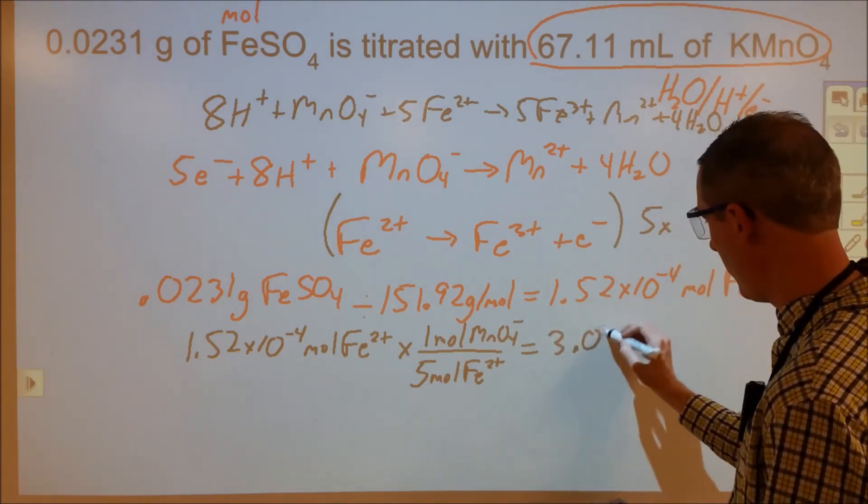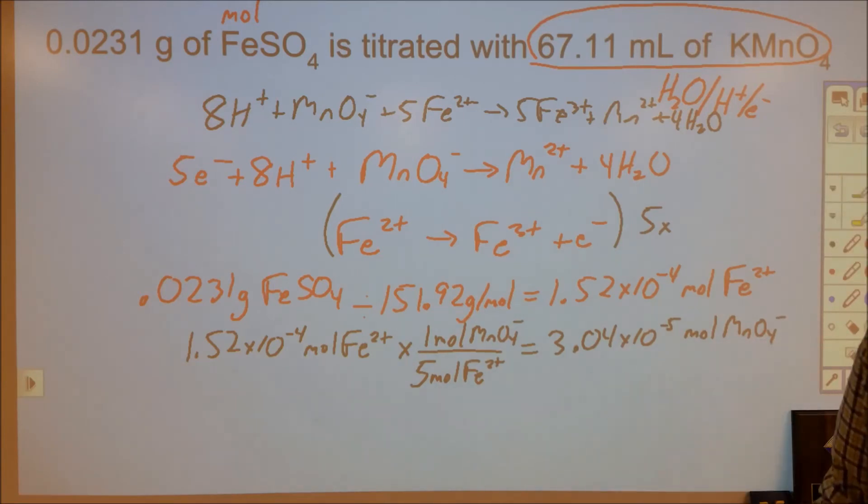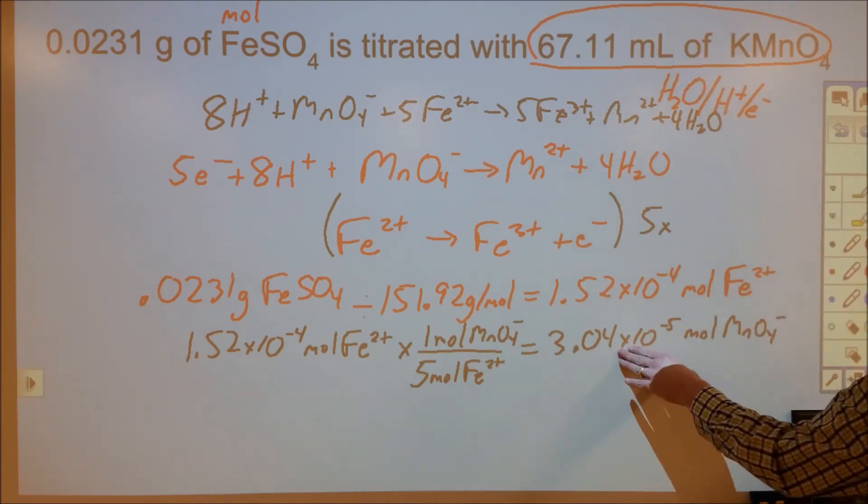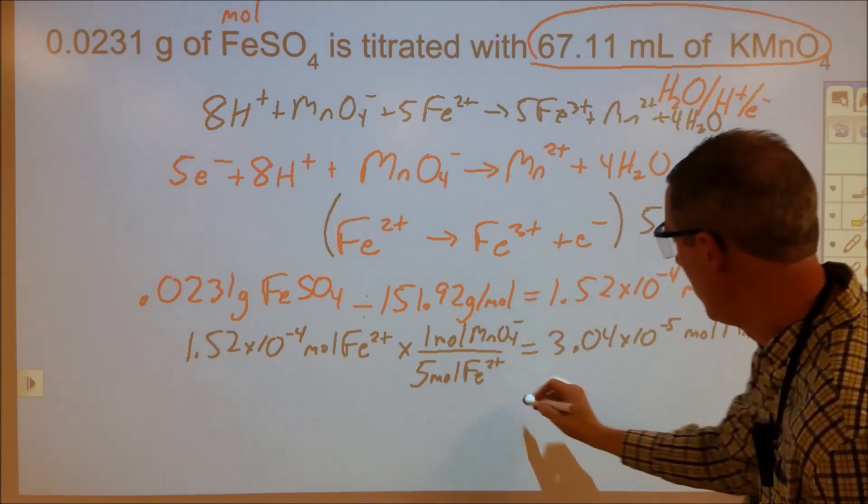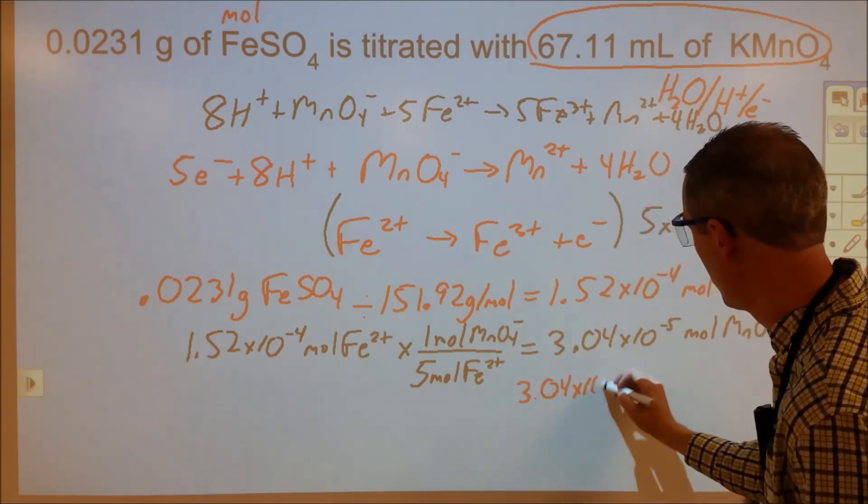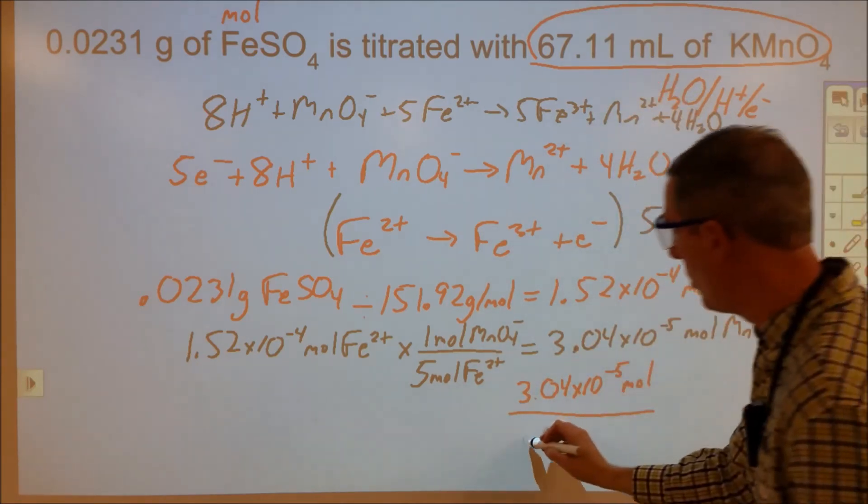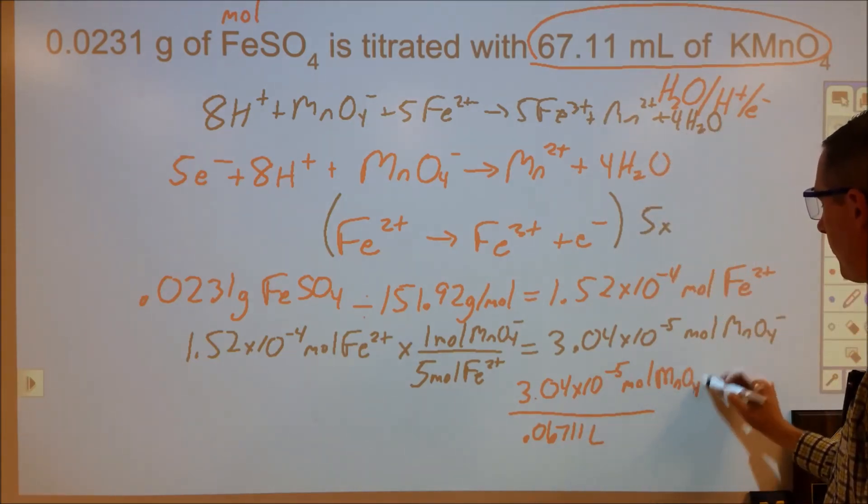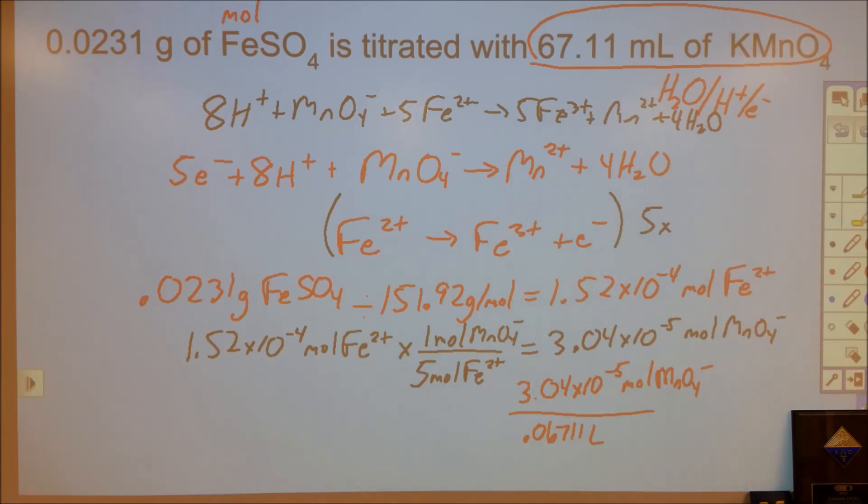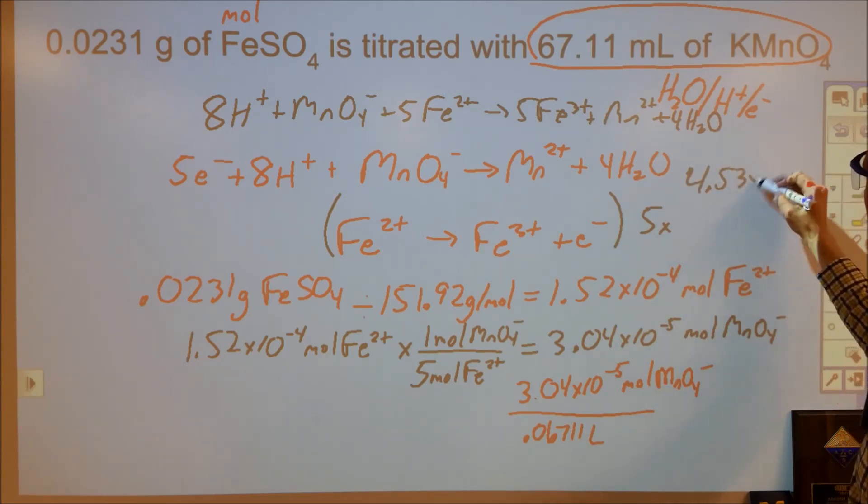Which comes out to be 3.04 times 10⁻⁵ mol, and this is really critical because now I can go back, I know my volume, I know my moles, I can find my concentration. So the last thing I'm going to do, I'm going to take my moles here and I'm going to divide them by my liters, so 0.06711 liters of the permanganate, and that will give me my concentration. And that comes out to be 4.53 times 10⁻⁴ molar potassium permanganate.